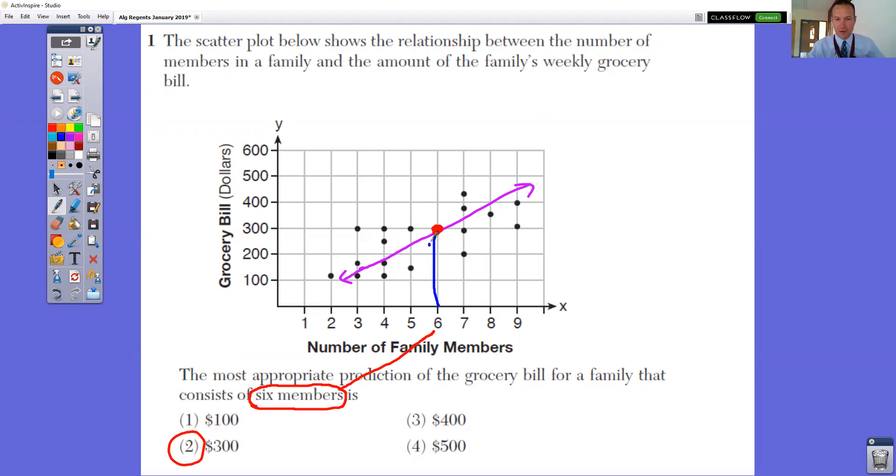Whereas six, when you go up from six, it is approximately $300, choice two.